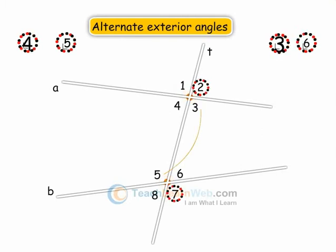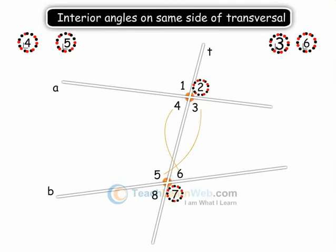Angles 3 and 5, 4 and 6 are pair of interior angles on same side of transversal.